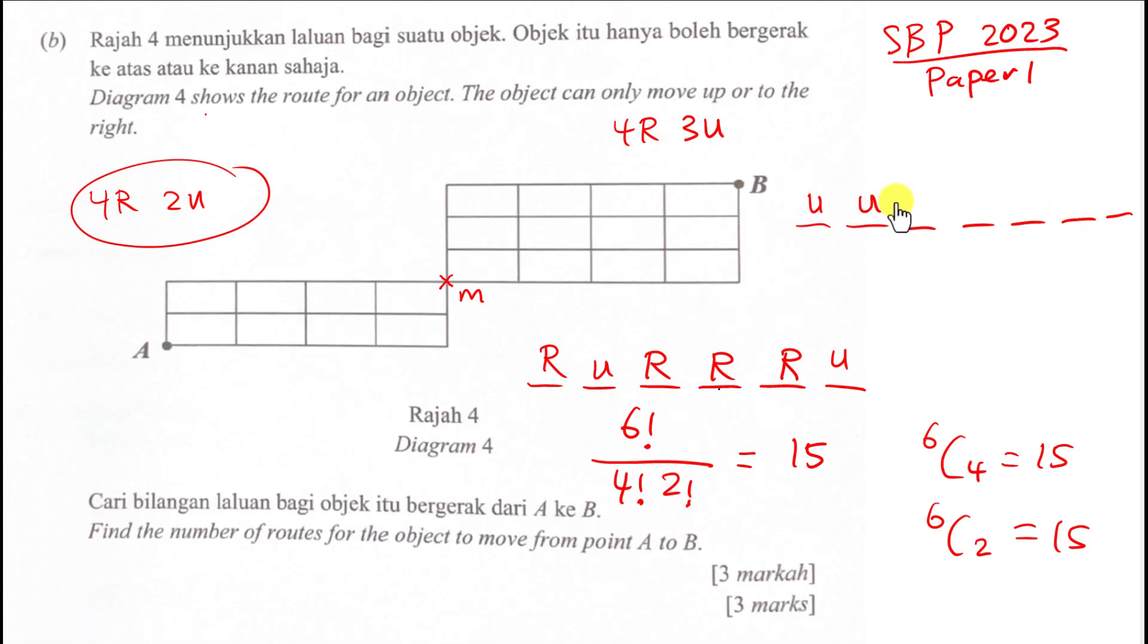Then if I want to arrange all the seven of them, seven factorial, but I have four R, so four factorial, and three factorial because I got three U in it repeating. Then you can quickly type this one into your calculator. Your calculator should tell you it's 35.